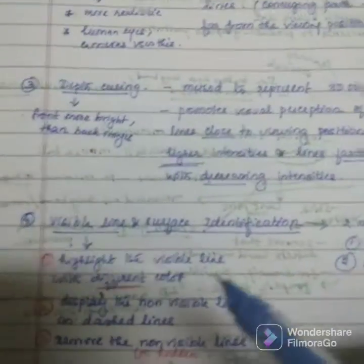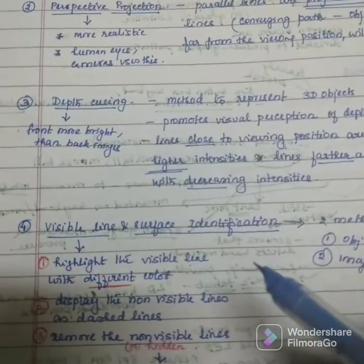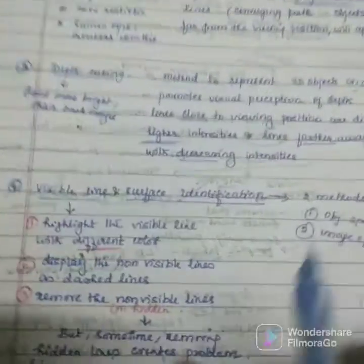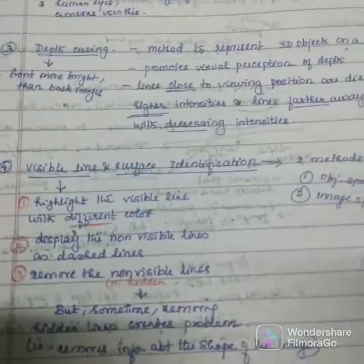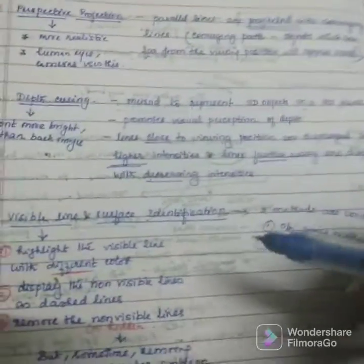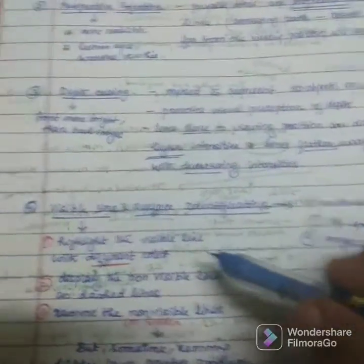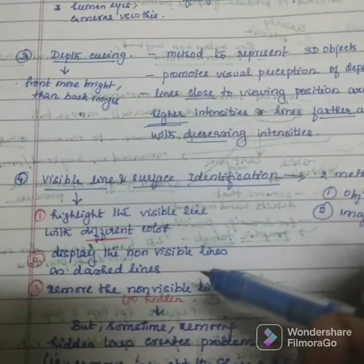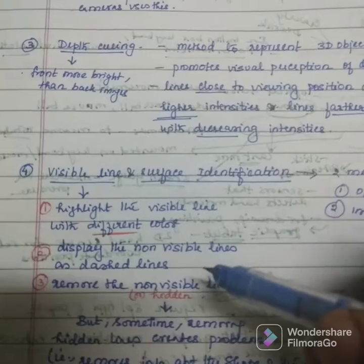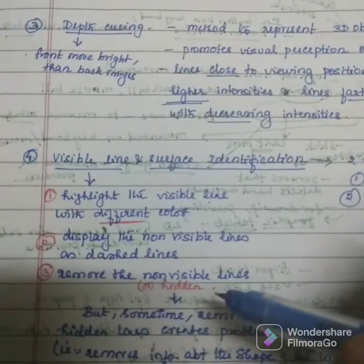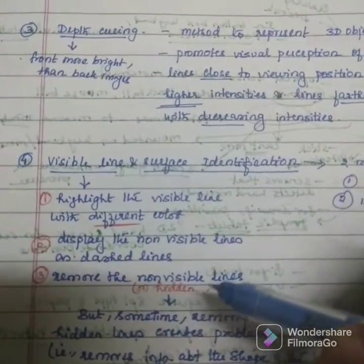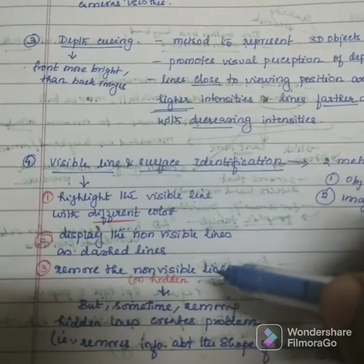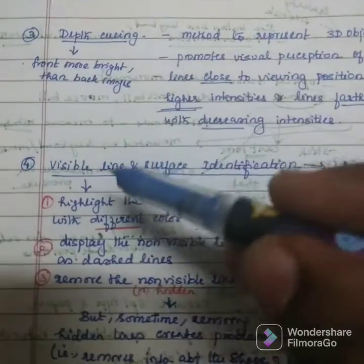Next is visible line and surface identification. Visible lines remove the non-visible lines — non-visible means hidden lines. These are the criteria which are followed in visible line identification.